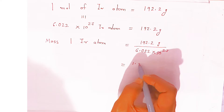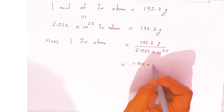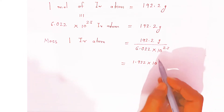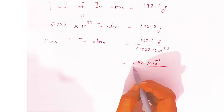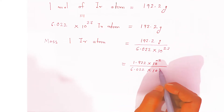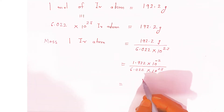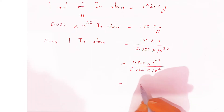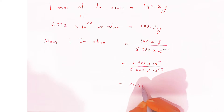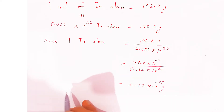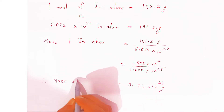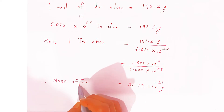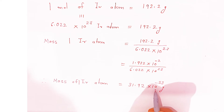You can write it as 1.922 × 10⁻² divided by 6.022 × 10²³. When you solve this using the log table, it comes to approximately 31.92 × 10⁻²³ grams. This is the mass of 1 iridium atom.